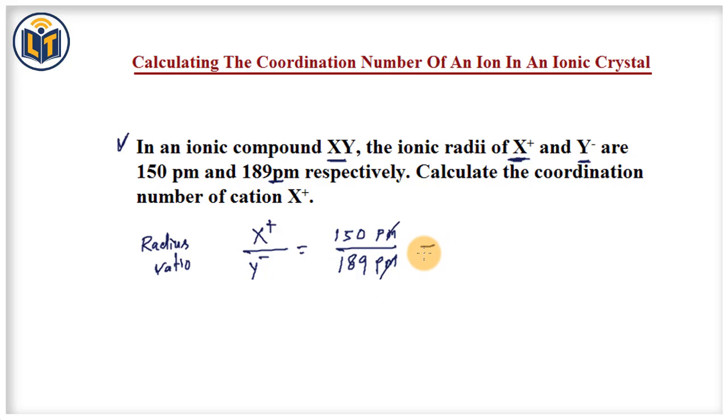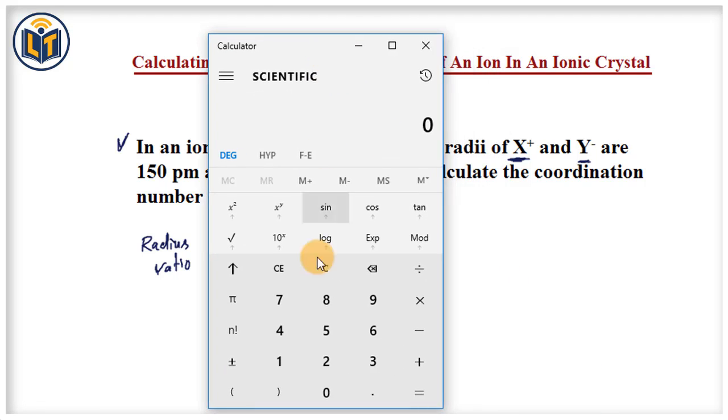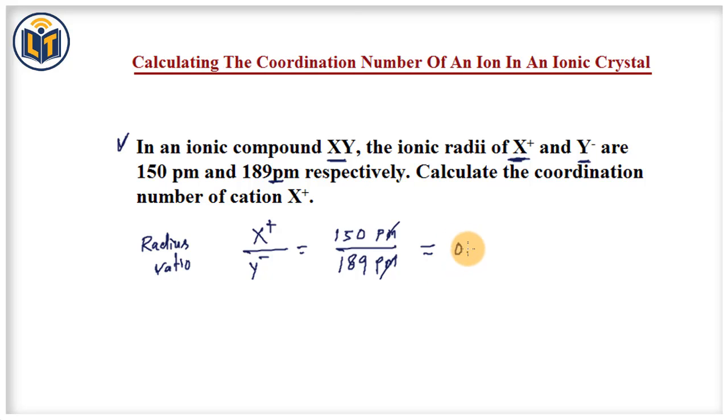Same units will cancel out. Ratio doesn't have any unit. 150 divided by 189 gives us the value 0.794. We can round off these figures. Here we get 0.794. This is the radius ratio for this ionic compound XY.